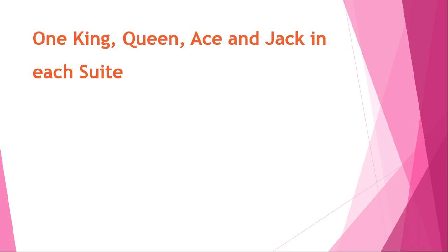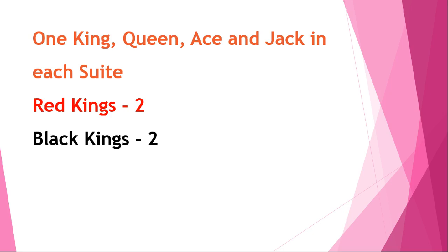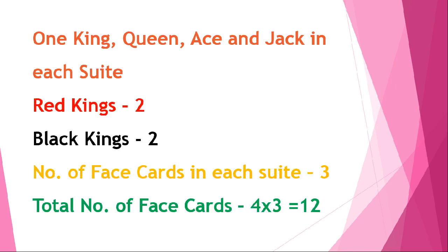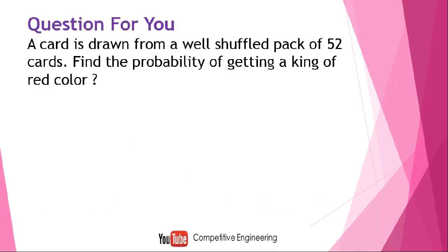Since there are four suits, there will be four Kings, four Queens, four Aces, and four Jacks in the full deck. Red Kings are 2, because in the heart suit and diamond suit the kings are in red color. The number of face cards in each suit is three, so total number of face cards is 4 × 3 = 12.